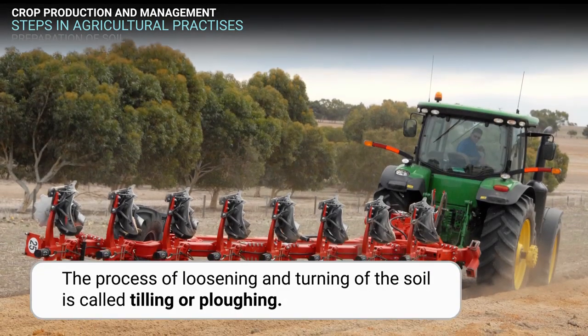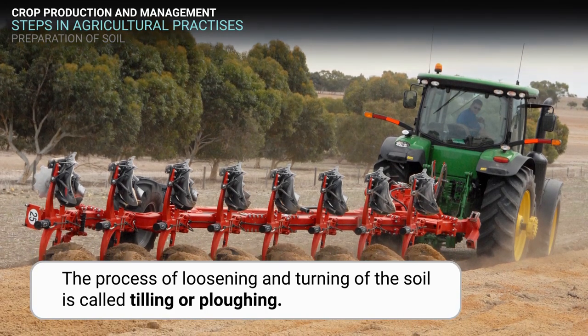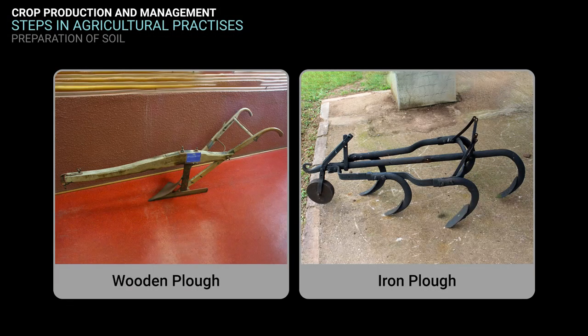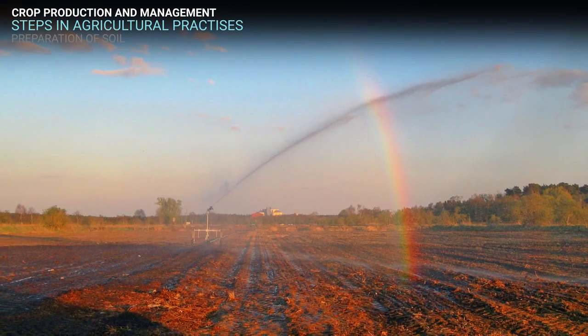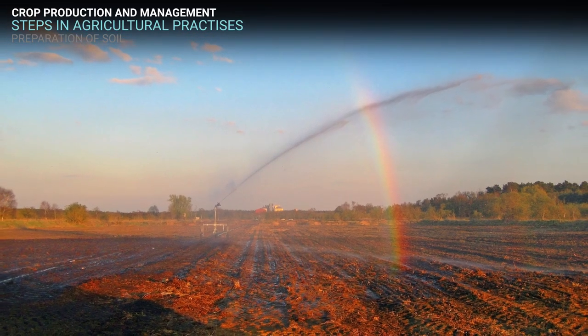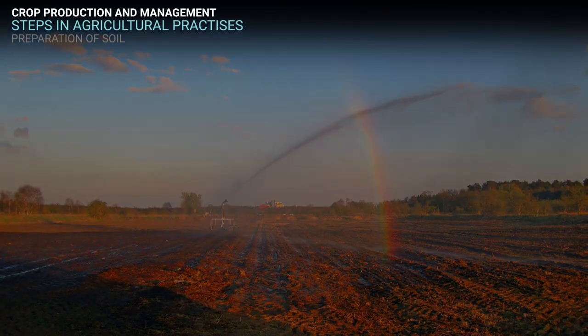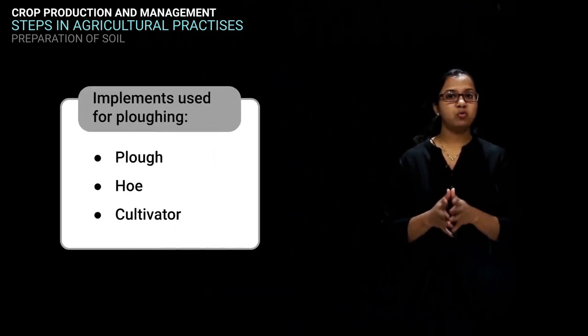The process of loosening and turning of the soil is called tilling or plowing, done by using a plow. Plows are made of wood or iron. If the soil is very dry, it may need watering before plowing. The plowed field may have big pieces of soil called crumbs, which must be broken with a plank. The field is leveled for sowing and irrigation purposes using a leveller. Sometimes manure is added to the soil before tilling for proper mixing, and this soil is then watered before sowing seeds.